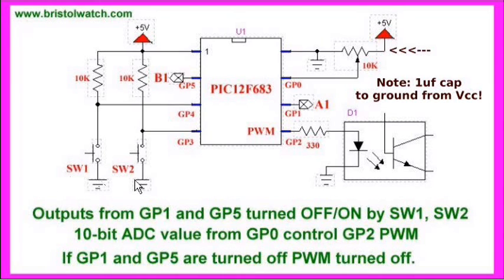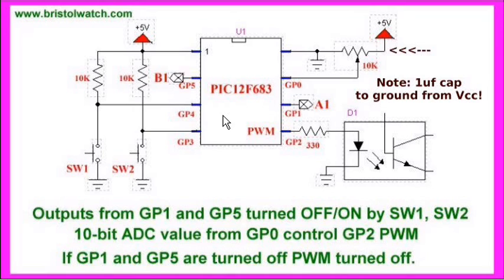There are two switches, SW1 and SW2 — one or the other, or both, need to be active before there can be a pulse width modulation output. That's because this circuit was designed to drive an H-bridge motor control, and the pulse width modulation was designed to control the speed.